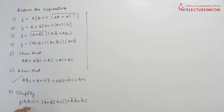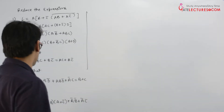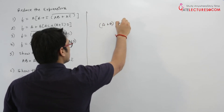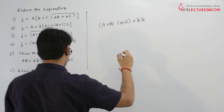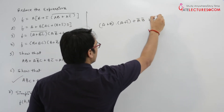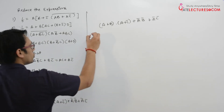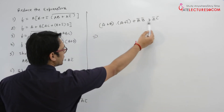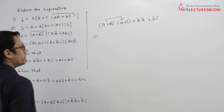The last question says: simplify (A plus B) dot (A plus C complement) plus A complement B complement plus A complement C complement. We have to simplify this expression. You can start by expanding any one of them and opening these brackets. First of all, we will do it step by step — open these brackets.